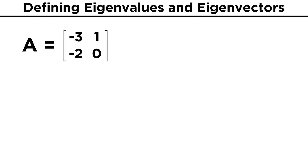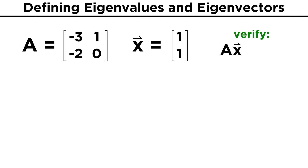Let's say that matrix A is a two by two matrix with elements negative three, one, negative two, and zero. Now let's check that the vector X equals [1, 1] is an eigenvector. To do this, we will simply multiply A by X and see if we get back X multiplied by some scalar.